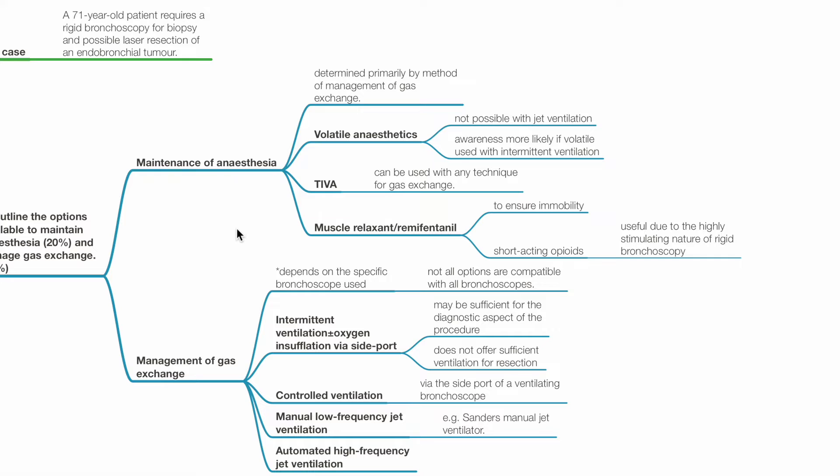Second option is total intravenous anesthesia. This can be used with any technique for gas exchange. Muscle relaxant and remifentanil ensure immobility. Short-acting opioids are useful due to the highly stimulating nature of rigid bronchoscopy.